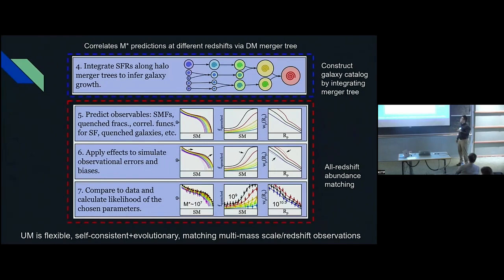You also apply relevant observational systematics, and then you can calculate likelihood. You do this million times in parameter space, you map out the posterior and you come up with a best fit model that can simultaneously match the constraints. This is a self-consistent flexible model that matches the wide range of mass and redshifts.